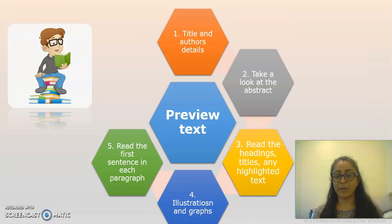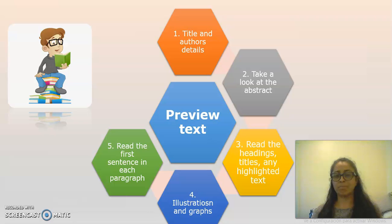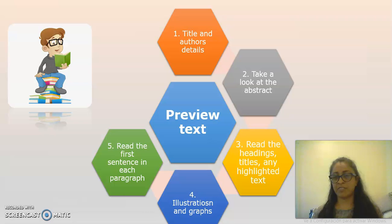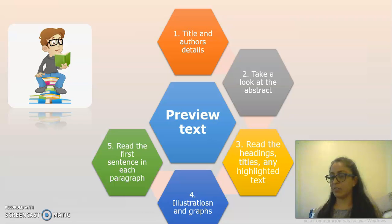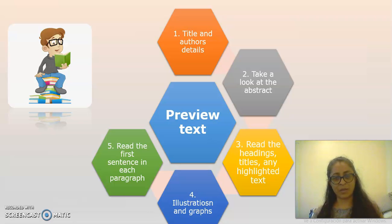When we preview a text, we first go through the title and the author's details. We read a little bit of the biography of the writer, then move to the abstract. We check if there's a preface or if someone else has written something about the book. We read the headings, titles, or any highlighted text. We also look for illustrations, graphs, or any kind of picture. The last action when previewing is to read the first sentence in each paragraph. This is basically what we do when we first have that book in our hands.